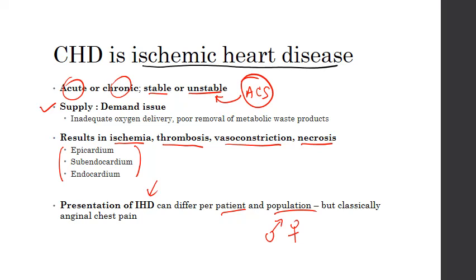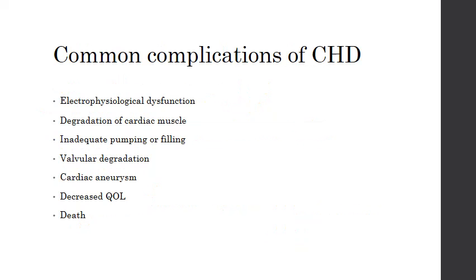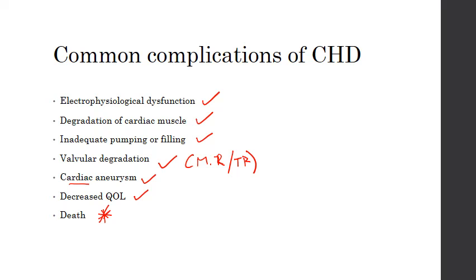The presentation of ischemic heart disease can really differ per patient and per population — and this is particularly relevant when thinking about the difference between men and women. Classically, all presentations of acute and subacute ischemic heart disease present as anginal chest pain. Complications include electrophysiological dysfunction seen on ECG, degradation of heart muscle leading to chronic heart failure, inadequate pumping and filling, valvular degradation such as mitral or tricuspid regurgitation, ventricular aneurysms, decreased quality of life, and mortality.